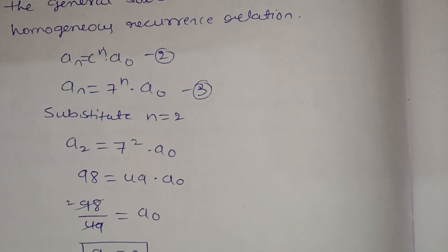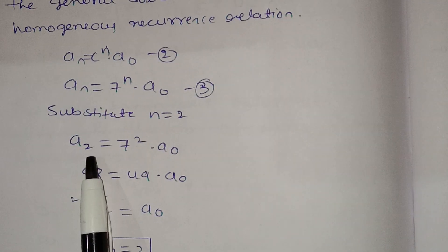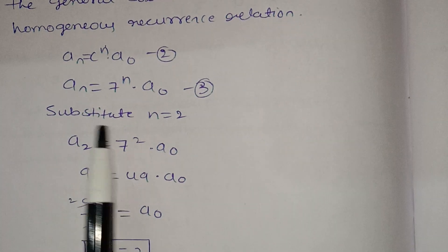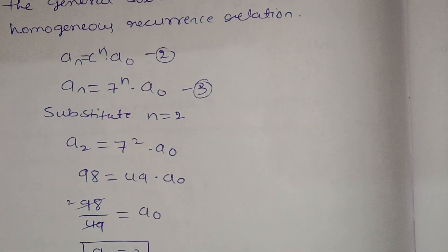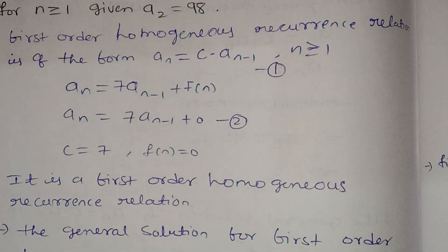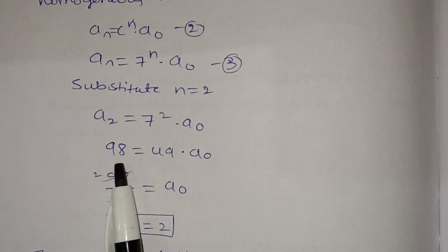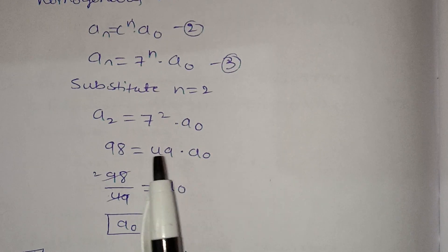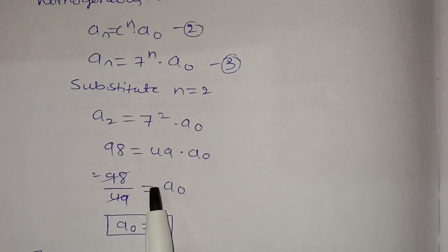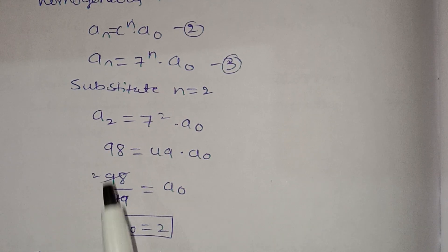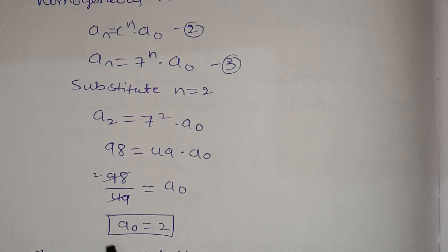Now substitute n equals 2. We get a₂ equals 7² · a₀, which is 49·a₀. Since a₂ equals 98, we have 98 equals 49·a₀, so a₀ equals 98 divided by 49, which gives a₀ equals 2.